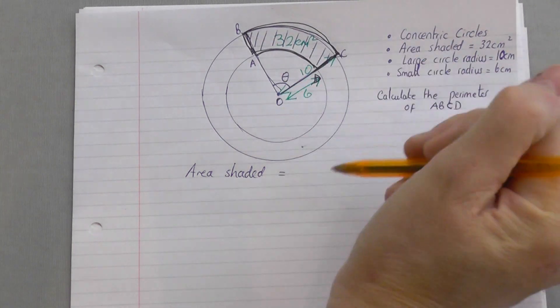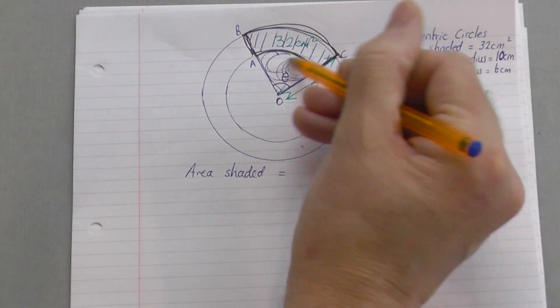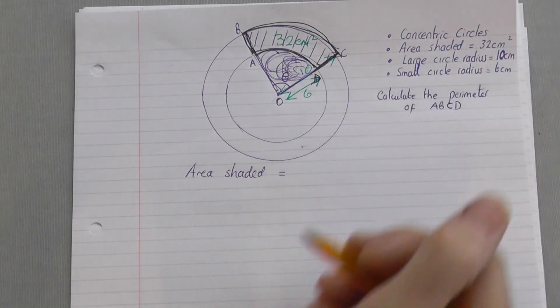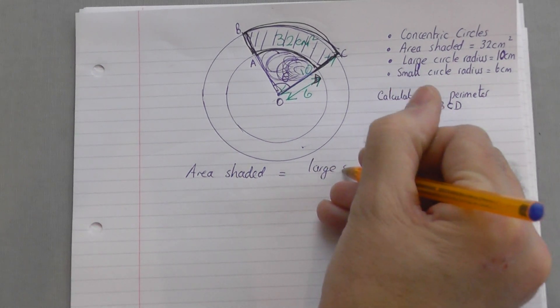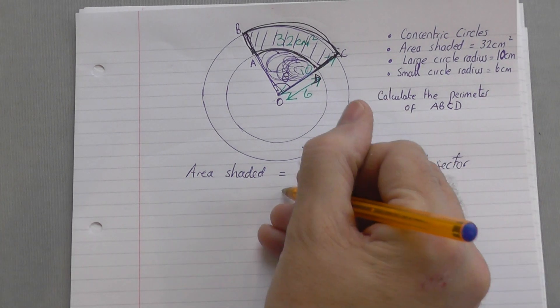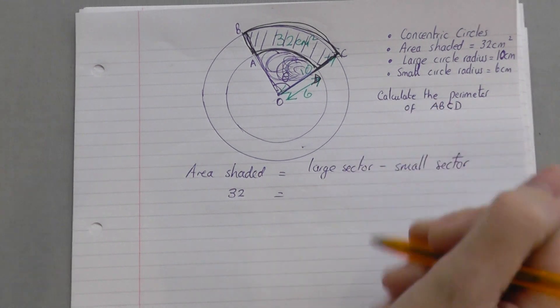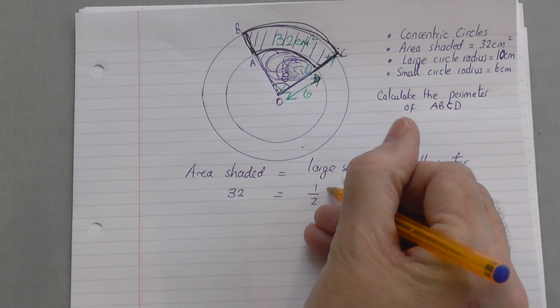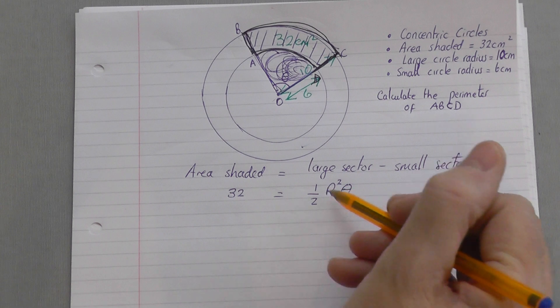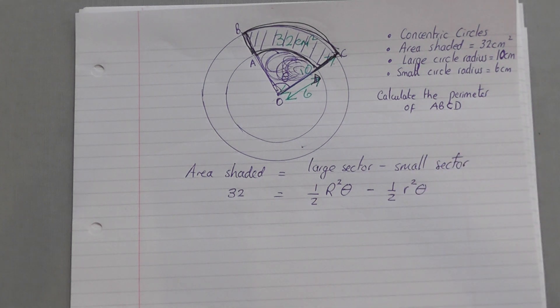It's the large sector, and if you subtract the small sector away from the large sector, I'll be left with what I want, which is the shaded area. So it's the large sector subtract the small sector. We do know that the area shaded is 32. The area of the large sector is half, now I'll call it big R squared theta, because it's the large sector, take away a half little r squared theta for the area of the small sector.